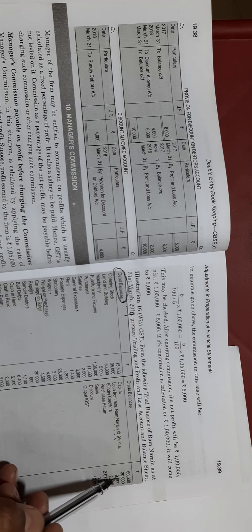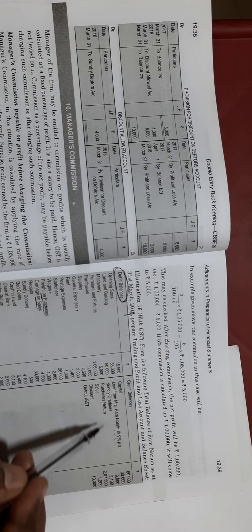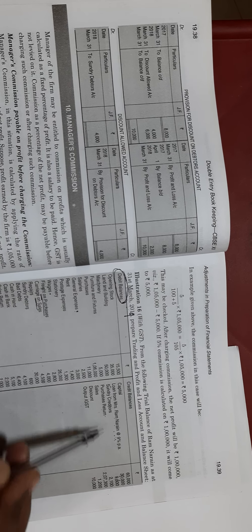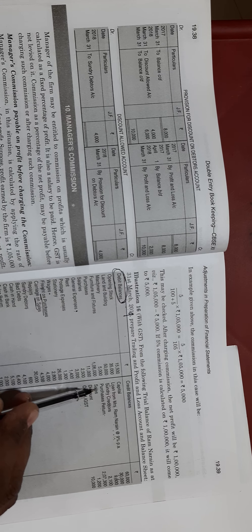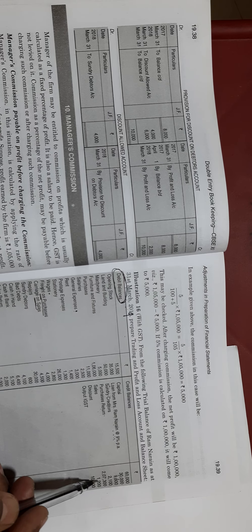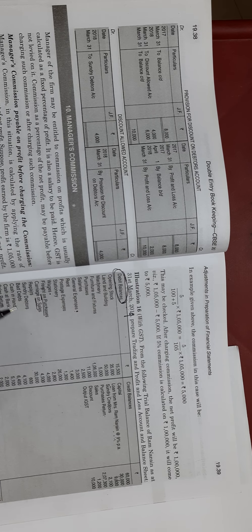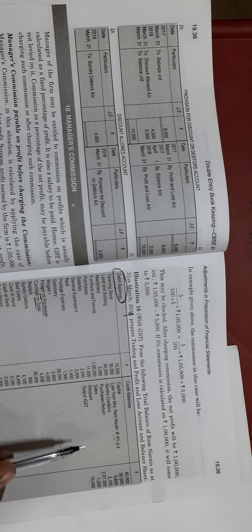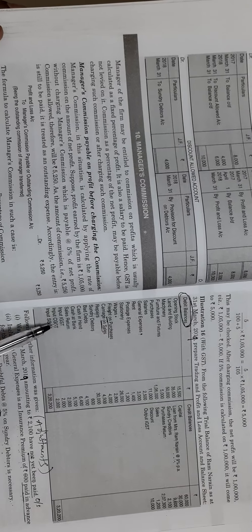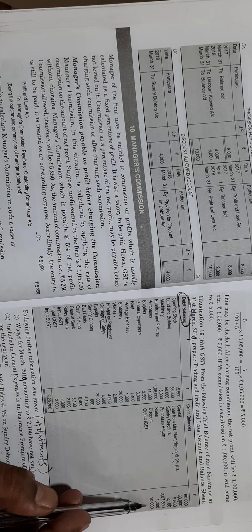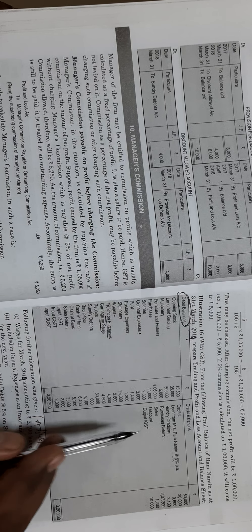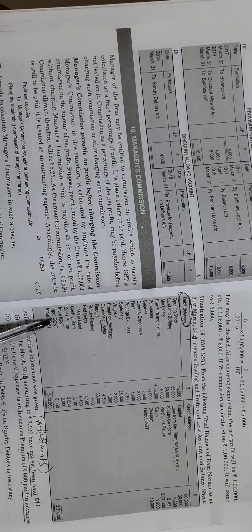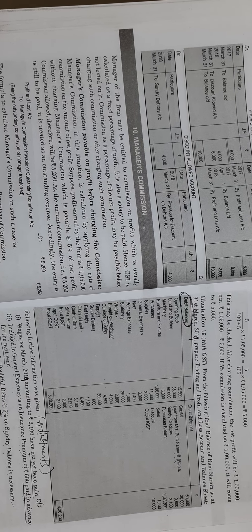On the credit side: capital and loan from Mr. Narain are liabilities. Sales go to trading account credit side. Discount received goes to profit and loss account credit side. Output SGST goes to balance sheet liabilities side. For GST: input IGST of 2,000 is shown on the asset side; output IGST of 10,000 is on the liabilities side. Alternatively, show output IGST 10,000 in the outer column and deduct input IGST 2,000 from it.